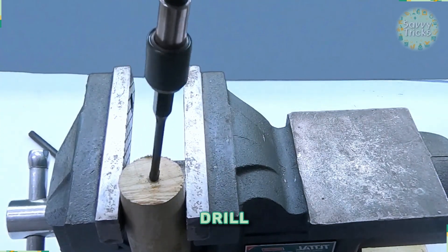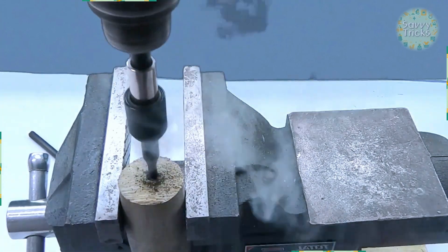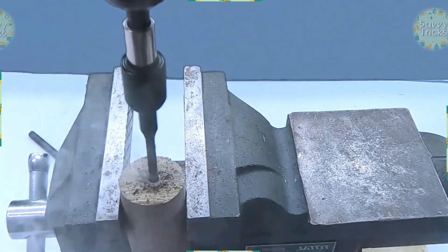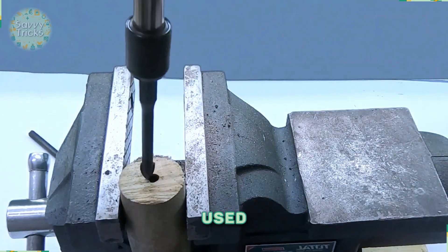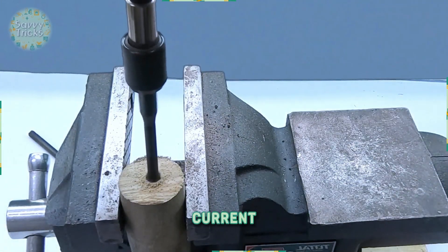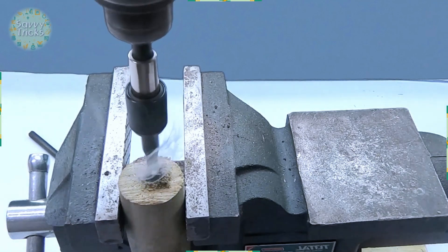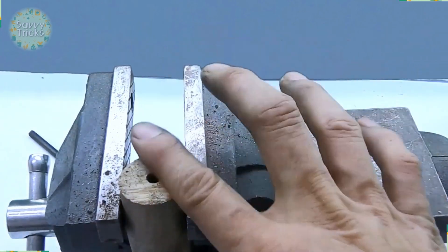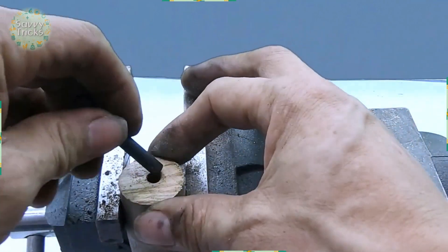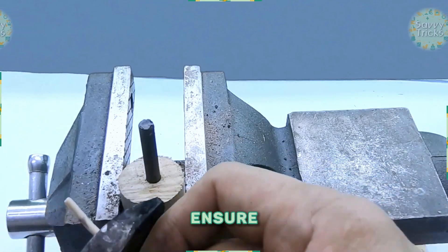Now use a drill to make a hole of the same size as the lead in a wooden block. This wood will be used as a handle and for safety from electric current, as wood is a bad conductor of electricity. Check the hole size by inserting the rod into the hole and ensure it fits perfectly.